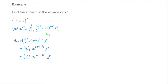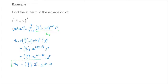I always like to write the power of x term last in the product, so I'll rewrite this general term t sub r as the binomial coefficient 7 choose r, times 2 to the power of r, times x to the power of 14 minus 2r. That's the general term of this binomial expansion.